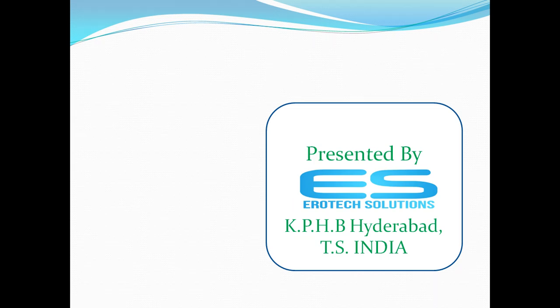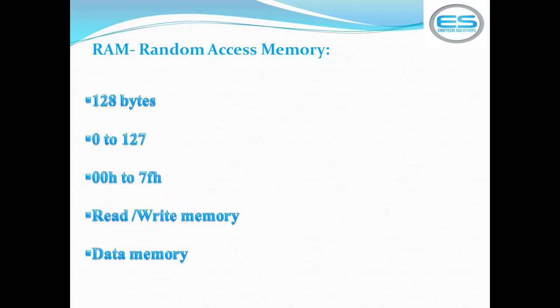Hi, this is Sheshanan from Aerodex Solutions. I want to give a lecture on RAM memory organization from the 8051 microcontroller. RAM stands for Random Access Memory. This memory allows storing data temporarily and supports both read and write operations. The 8051 has 128 bytes of RAM, with addresses from 0 to 127, represented in hexadecimal as 00h to 7Fh. This memory is called data memory.